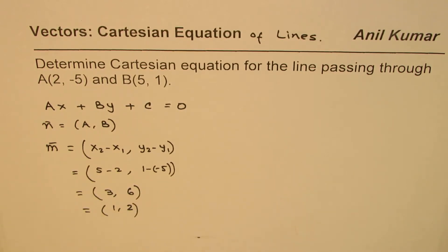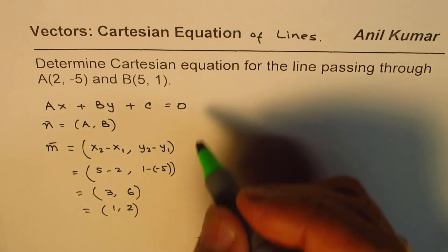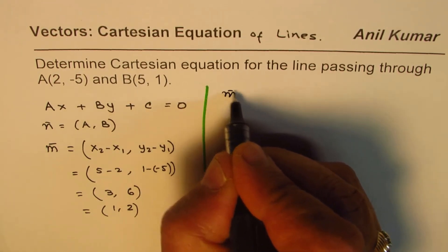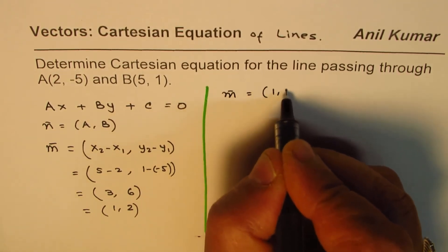So what we are given here is two points. And from these two points we can find the direction. So we have the direction vector M as (1, 2).